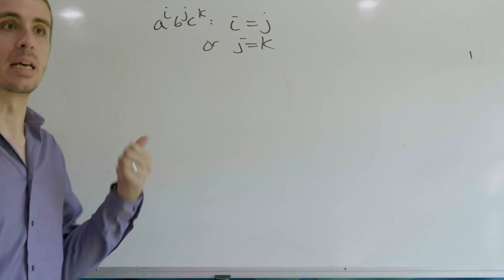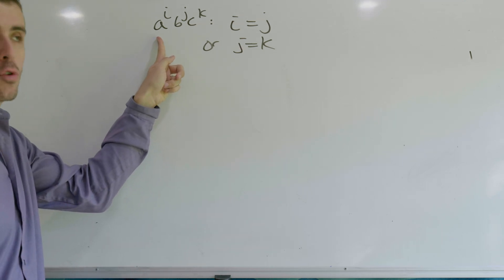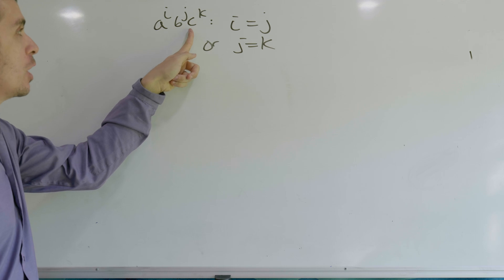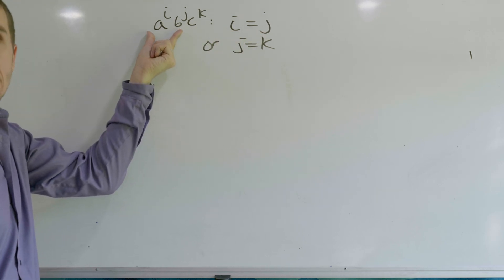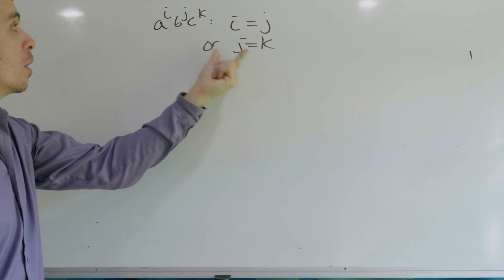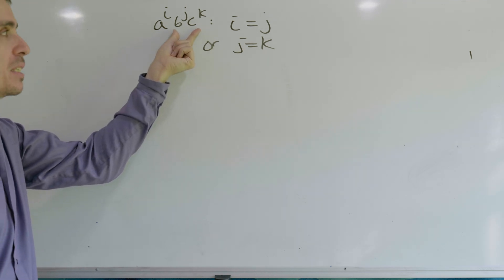Okay, let's make a context-free grammar for this language, which is the set of all strings of the form A to the i, B to the j, C to the k, where i equals j, which means we have an equal number of A's and B's, or we have an equal number of B's and C's.